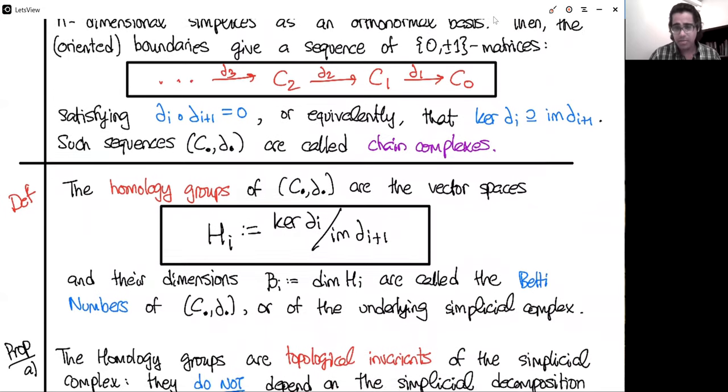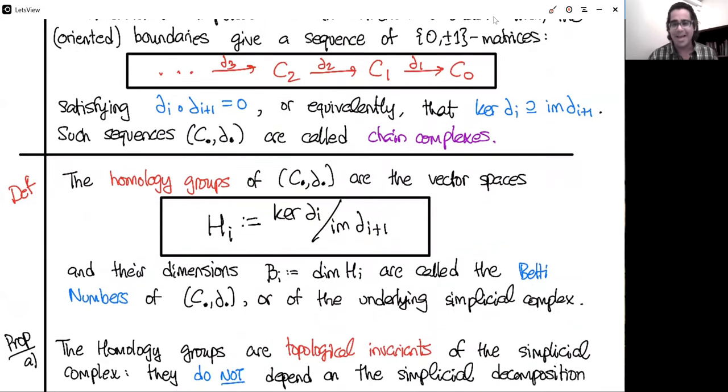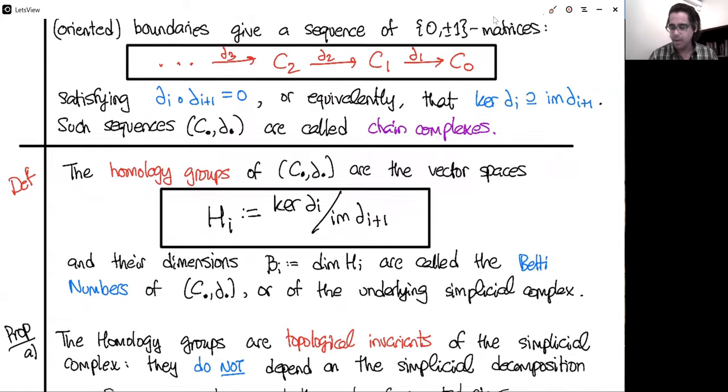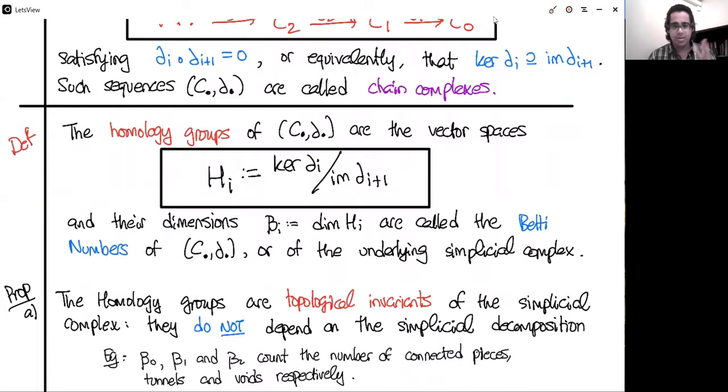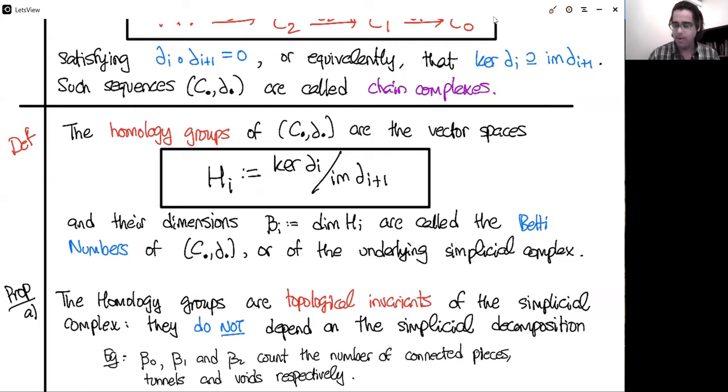So once you've defined homology groups, there are a few amazing properties, which in this short amount of time, I'm absolutely not going to be able to tell you why these are true, but I will tell you what they are. The first one is that the homology groups are topological invariants of the simplicial complex. Roughly, they don't really depend, even though we defined them in terms of these triangles, they don't really depend on how you chop your space up into triangles. They're invariant to that, they just depend on the underlying shape, which means they really have geometric meaning. So the dimension of the zero, first and second homology groups, the Betti zero, one, and two count the numbers of connected pieces in your simplicial complex, the number of tunnels, and the number of voids, the cavities, respectively. And there are similar interpretations for the higher ones, but they're far less geometric because we can't really visualize too much in dimensions four or five or something.